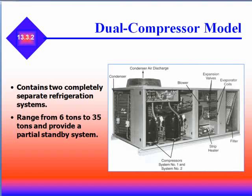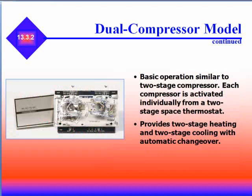Dual compressor models contain two completely separate refrigerant systems. They range from 6 tons to 35 tons and provide a partial standby system. Dual compressor models have basic operations similar to a two-stage compressor, and each compressor is activated individually from a two-stage thermostat. They provide two-stage heating and cooling with automatic changeover.